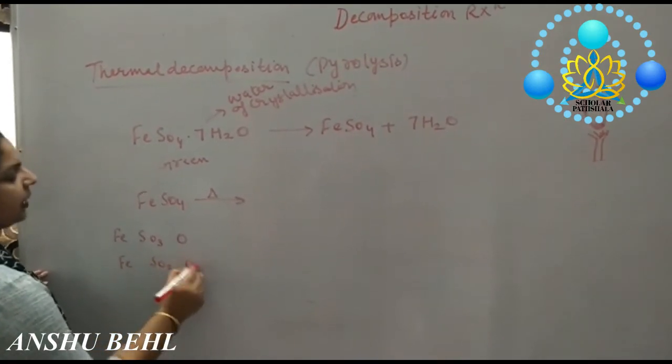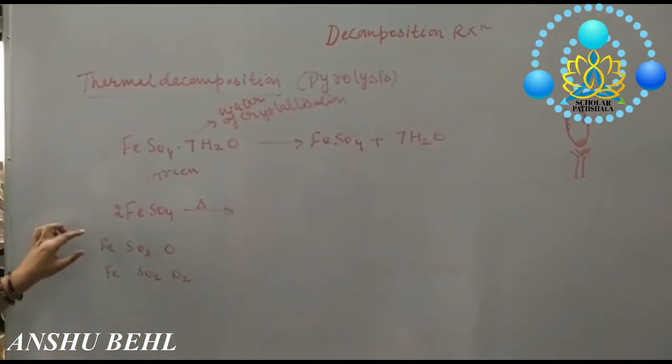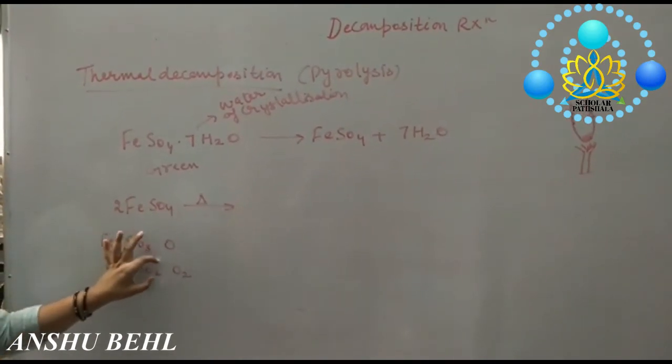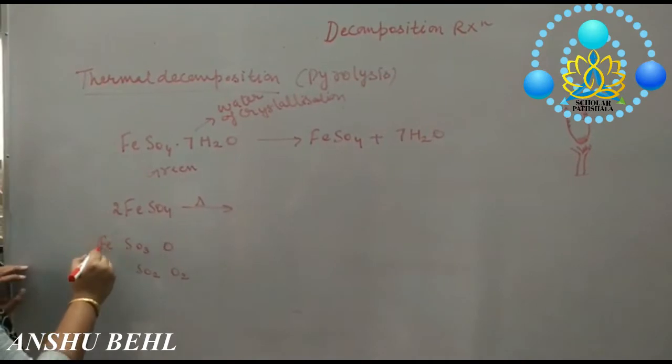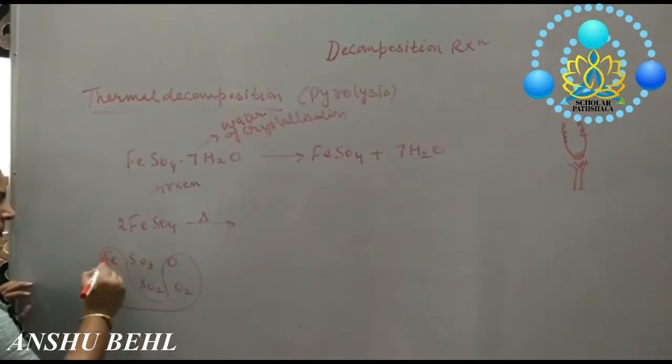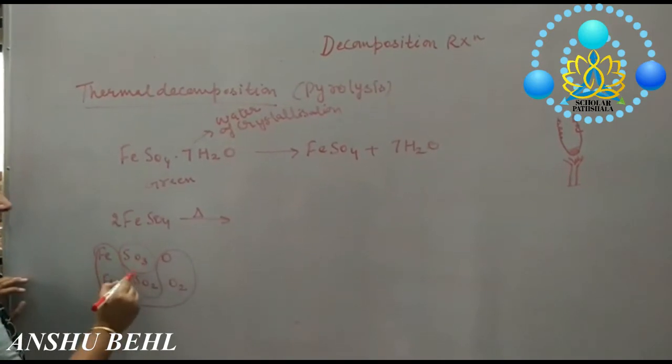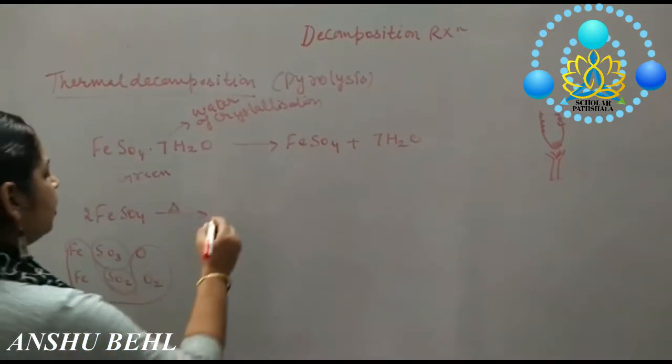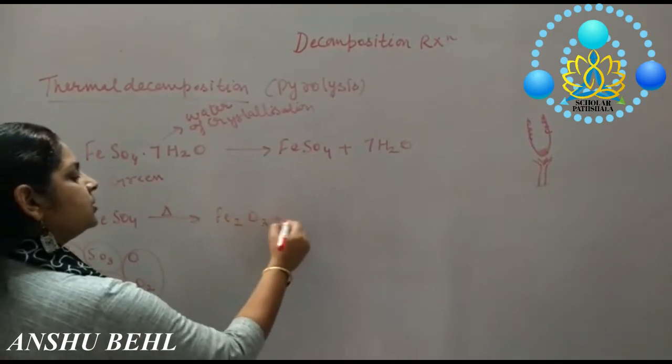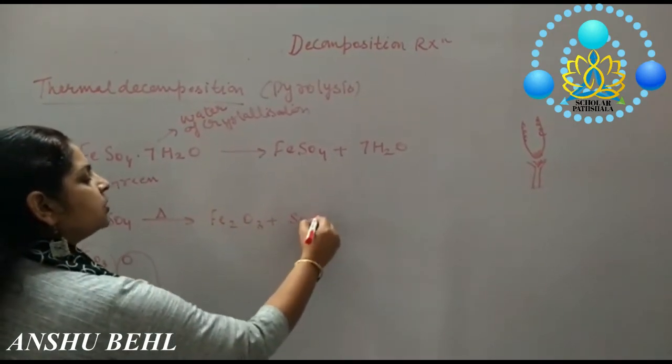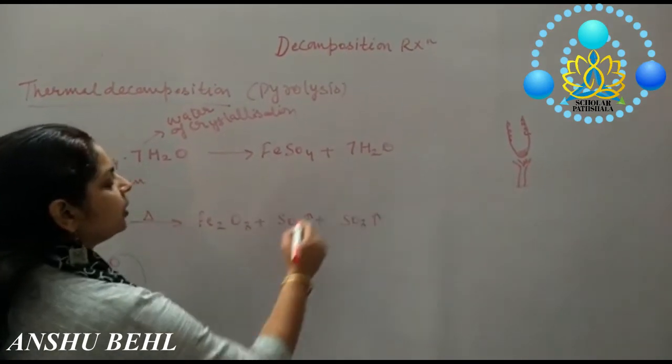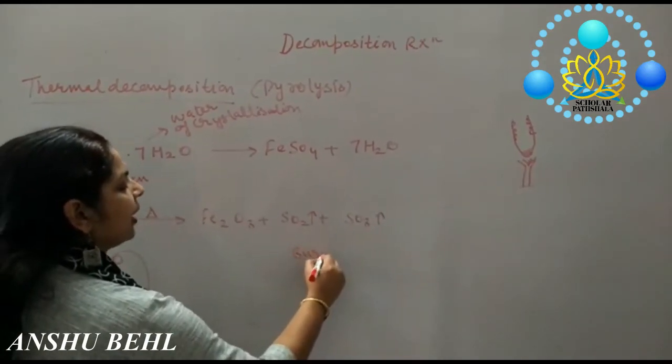We are taking here two molecules of Ferrous Sulphate. Breaking it into smaller units, combine them: Fe2O3, SO3 and SO2. You will get Fe2O3 plus Sulphur dioxide and Sulphur trioxide which will give you burning Sulphur like smell.